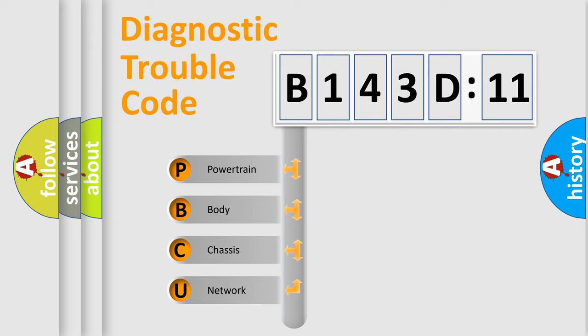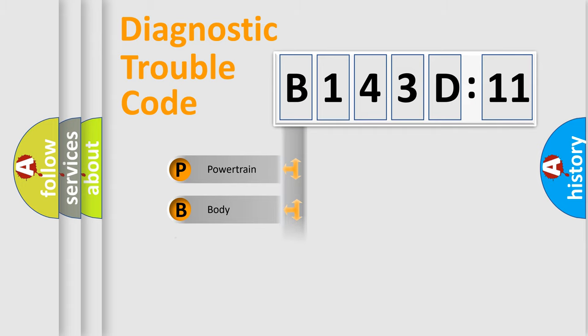If the second character is expressed as zero, it is a standardized error. In the case of numbers 1, 2, or 3, it is a manufacturer-specific error expression.